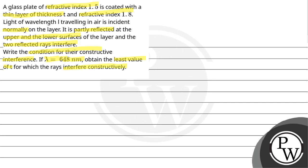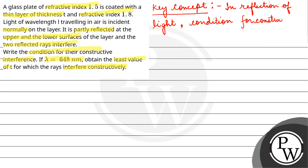So our key concept is reflection of light, condition for constructive interference. Delta x is equal to (2n+1) times lambda by 2, where n is equal to 0, 1, 2, and so on.